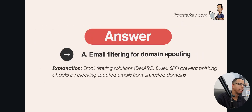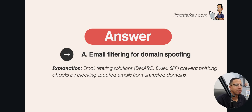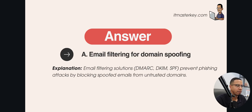The answer is email filtering for domain spoofing. You can use tools like DMARC, DKIM, and SPF to prevent phishing attacks by blocking spoofed emails from untrusted domains. Spoofed emails are from people acting like they're someone else — a fake email impersonating somebody. Phishing is exactly what it sounds like: somebody is fishing for information, hoping to find someone who will give them info they can duplicate, sell, or reuse at a later time.